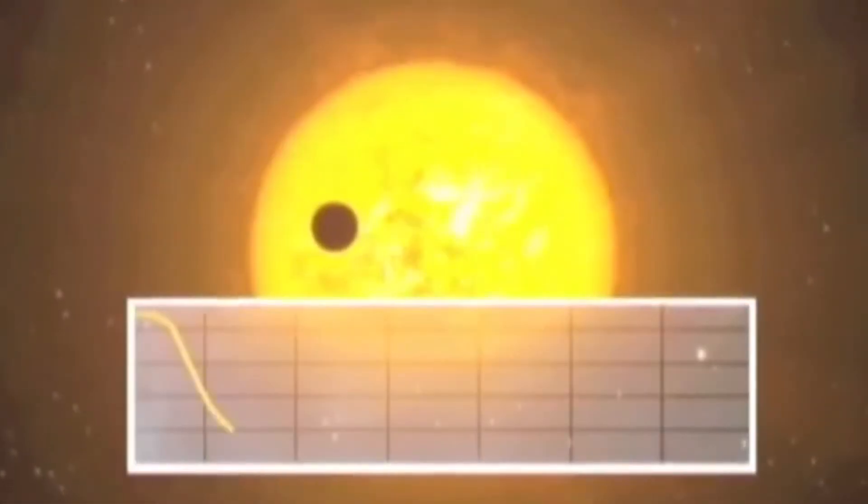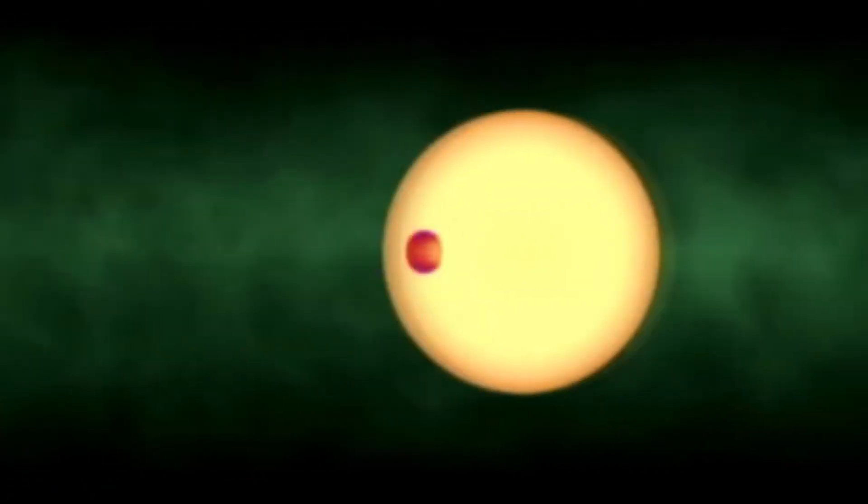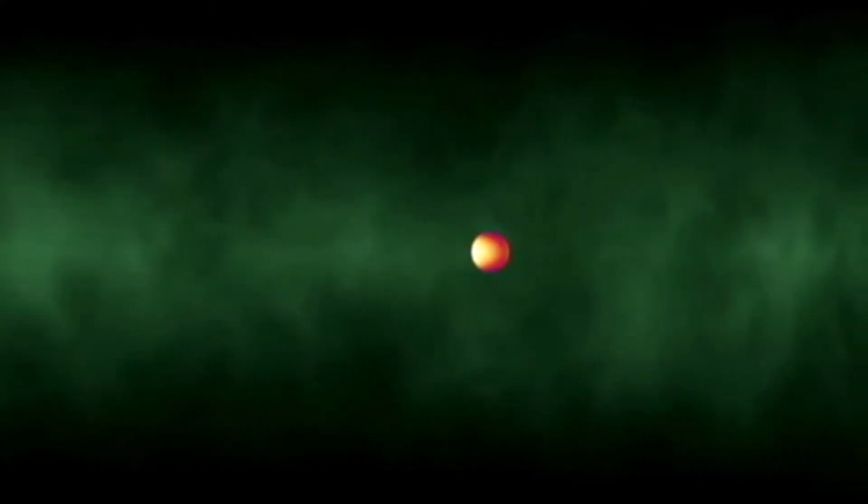This method has also proved useful in determining the atmospheric composition of some planets. When these bodies pass in front of their stars, light passes through the atmosphere of the planet, the spectra of which are then analyzed to see which chemical elements are present.